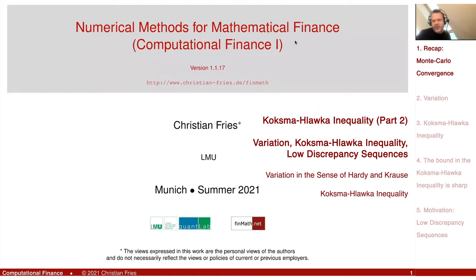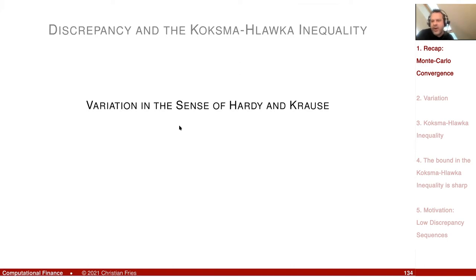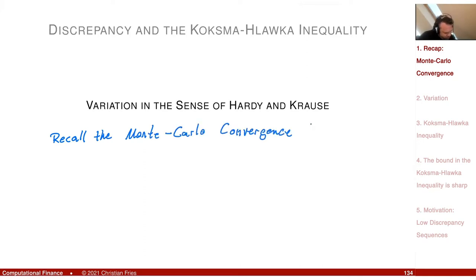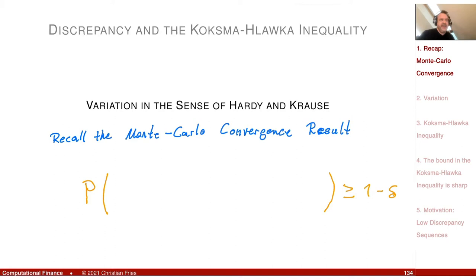Now I'd like to continue and introduce the discrepancy as a property of the sequence. Recall our Monte Carlo convergence rate. We had that the Monte Carlo integral, one divided by n, the sum from i equals one to n of f(x_i), deviates from the true integral.